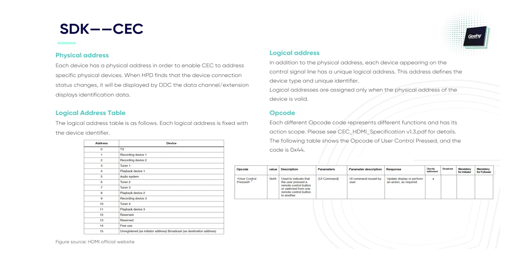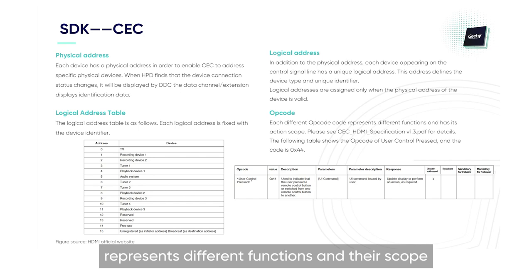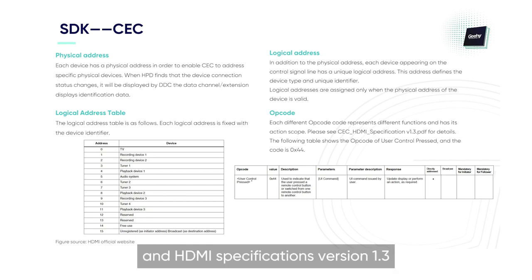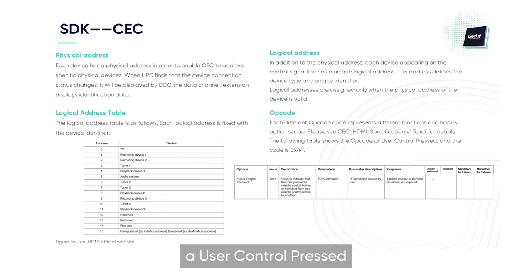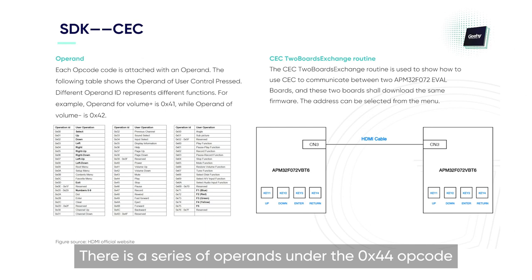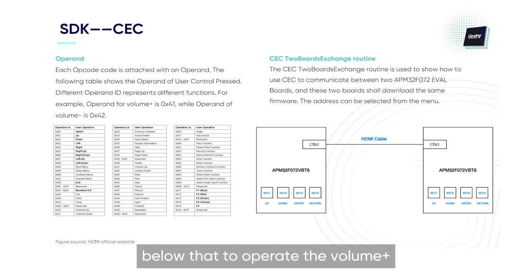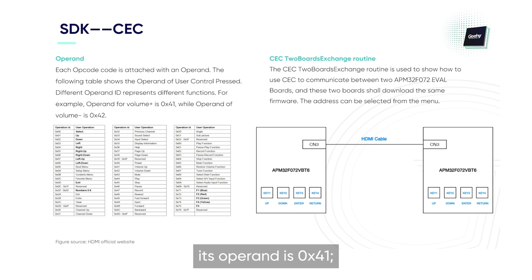There is also an opcode. Each different opcode represents different functions and their scope. For details, we can refer to the CEC and HDMI specifications version 1.3. For example, the opcode for user control pressed has a code of 0x44 and carries its operand. There are a series of operands under the 0x44 opcode, and different operands represent different functions. To operate volume plus under opcode 0x44, its operand is 0x41. Similarly, the operand for volume minus is 0x42.